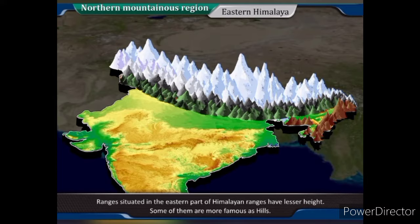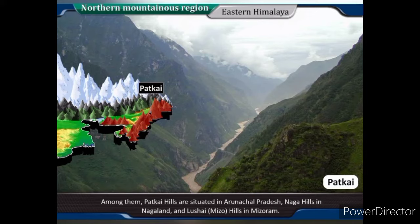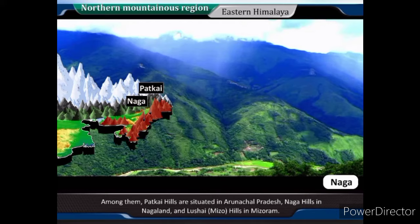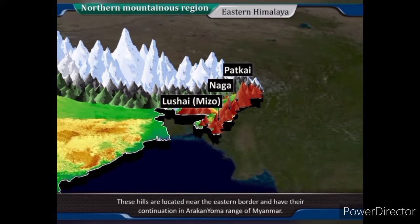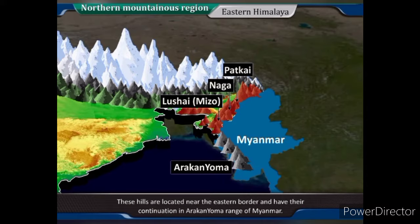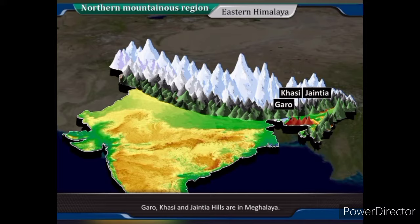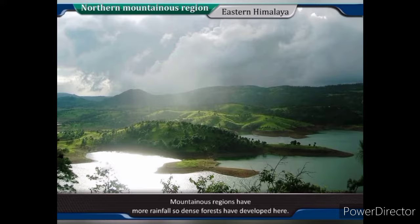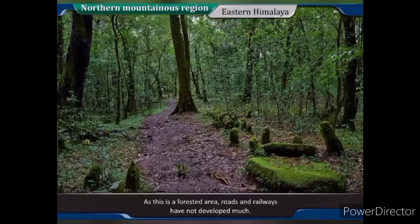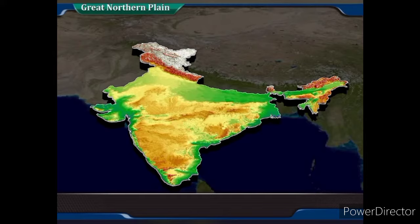Eastern Himalaya: Ranges situated in the eastern part of the Himalayan ranges have lesser height; some of them are more famous as hills. These hills are spread as smaller ranges. Among them, Patkai hills are situated in Arunachal Pradesh, Naga hills in Nagaland, and Lushai or Mizo hills in Mizoram. These hills are located near the eastern border and have their continuation in the Arakan-Yoma range of Myanmar. Garo, Khasi and Jaintia hills are in Meghalaya. Mountainous regions have more rainfall, so dense forests have developed here, but roads and railways have not developed much.